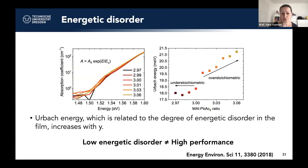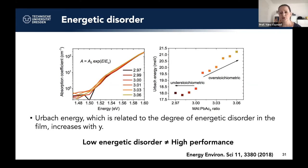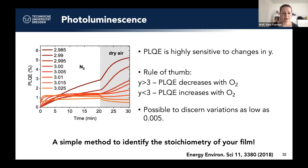We also measured energetic disorder via the Urbach energy using photothermal deflection spectroscopy. Under-stoichiometric samples have lower energetic disorder than over-stoichiometric samples, and yet their efficiency is not as high. So low energetic disorder is also not a guarantee of high performance.